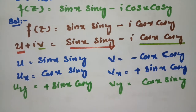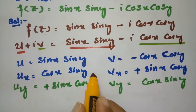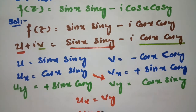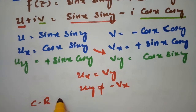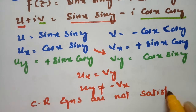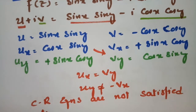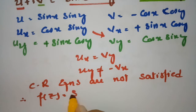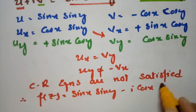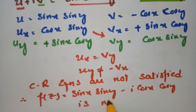Here ux = vy — that is satisfied. However, uy ≠ −vx, so the second CR equation fails. Since CR equations are not satisfied, f(z) = sin x sin y − i cos x cos y is not analytic.